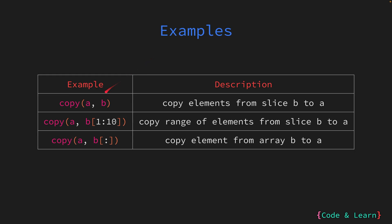Here are a few examples of the copy function in use. In the first example we are copying elements from slice p to a. In the second example we are copying a range of elements from b to a, that is elements at index 1 through 9. In the third example b is an array, so first we need to convert it to a slice for copy to work. We do that using a slice expression — since we want all values from b, we don't specify a starting or ending index. That is how you can copy from an array to a slice.